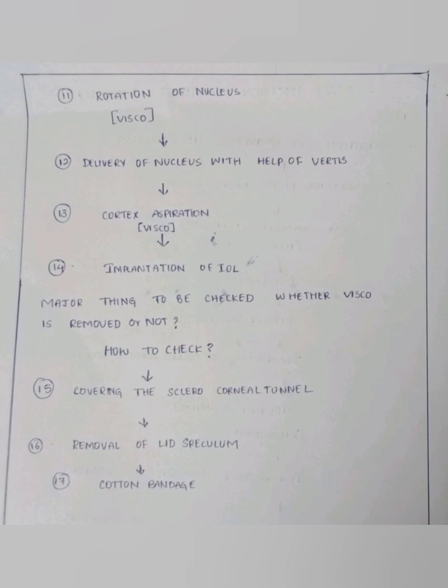After the fourteenth step, the most important thing to check is whether the viscoelastic has been removed or not. When visco is not removed, it occludes the angle structure and increases intraocular pressure, causing the patient pain and irritation after surgery. To confirm that visco is removed, inject with an empty syringe through the side port. When there is a single large bubble formation, there is no more visco. But when there are many small bubbles with a frothy appearance, visco has not been fully removed. Continuous washing should be done until the visco is completely removed.